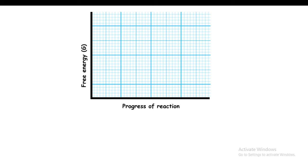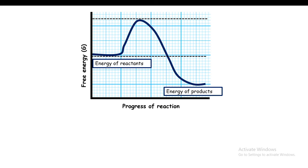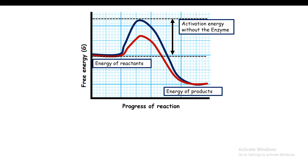Here is a graph to help us understand how enzyme and substrate work. On the x-axis you have reaction progression — kind of like time — and on the y-axis you have free energy change. Without any enzyme, if you add a substrate it would eventually become a product but it would take a lot of time. The graph shows the energy of the reactants as the initial part, and then eventually it gets converted into the product.